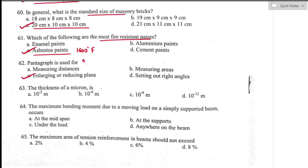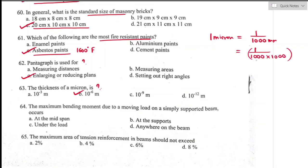Question number sixty-three: the thickness of a micron is — a micrometer, commonly known as a micron, equals 10⁻⁶ m. We know 1 micron = 1/1000 mm, and converting: 1/(1000 × 1000) = 10⁻⁶ m. Option B is the right answer.